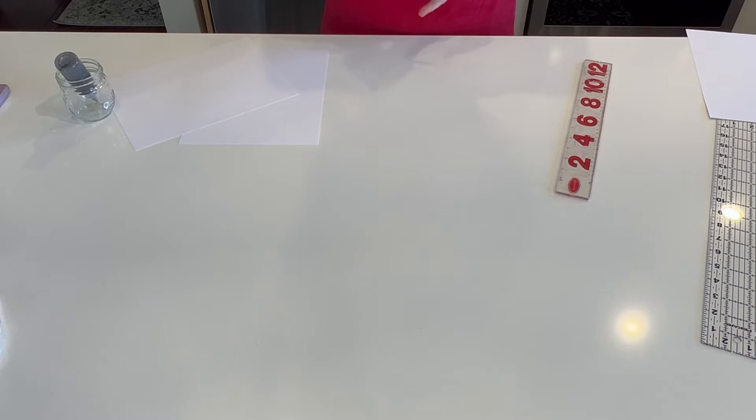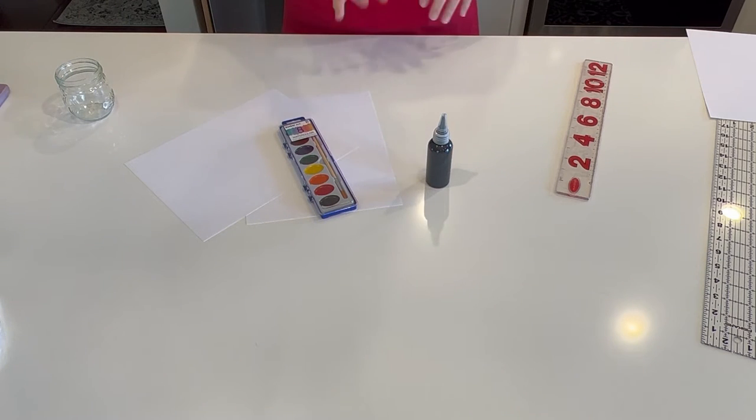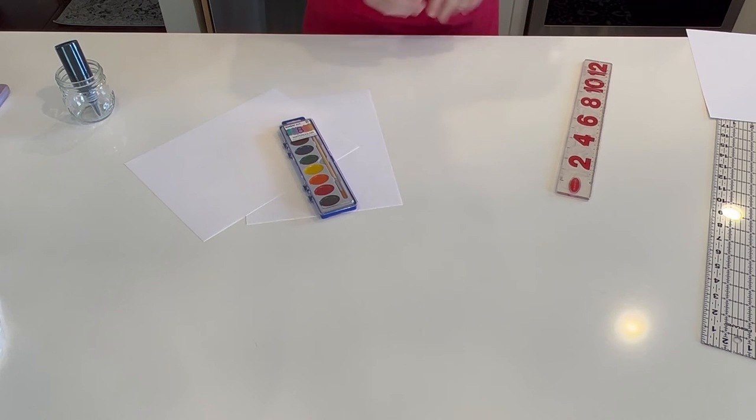This month we're going to be making a faux stained glass. So in your kit you're going to have a couple sheets of paper, some watercolors, and some black glue which is really just glue that's been mixed with black paint. It is acrylic paint so it's staining, so remember to always cover your surfaces and protect your clothes. You'll need a pencil and a ruler is very helpful but not necessary.